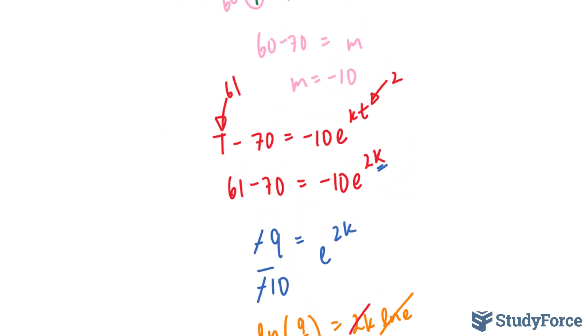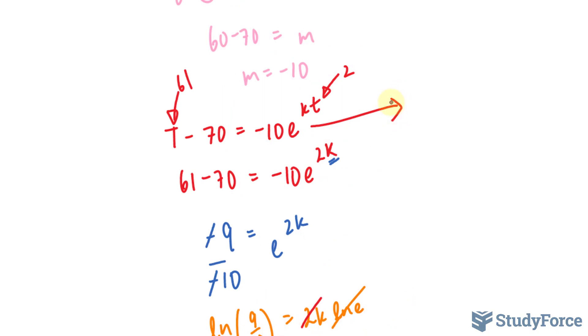So my equation now has become this part where T - 70 is equal to -10e^(ln(9/10) * t/2). I simply took the 2 that was underneath and put it under the t. And you can do that. It doesn't change the statement mathematically. Now, I'll solve for T by bringing this over. And now I have capital T with respect to time is equal to -10e^(ln(9/10) * t/2) + 70.